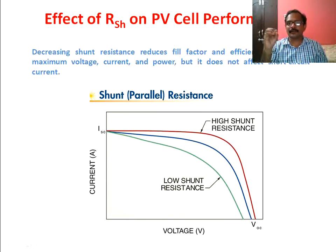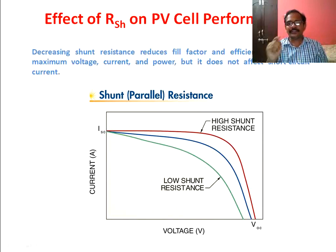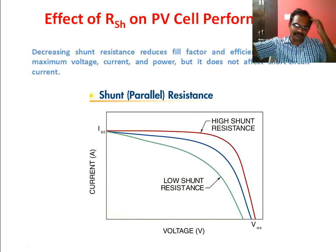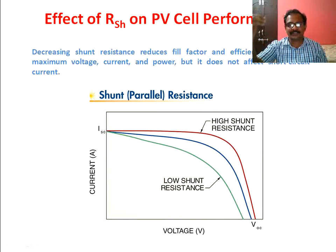Now, the effect of shunt resistance on the performance of a PV cell. The ideal value of shunt resistance should be infinity. Taking the blue curve which has some shunt resistance — if I increase the shunt resistance, the curve will shift upwards because the ideal value is infinity, so it should be as high as possible. The blue curve will move upwards and become the red curve, meaning the performance of the solar cell is now better.